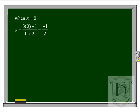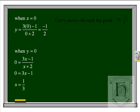When x is equal to 0, we can find where we cross the axis. So y is equal to minus 1 over 2, and the curve passes through the point (0, minus 1 half). When y equals 0, we can find where it crosses the other axis.